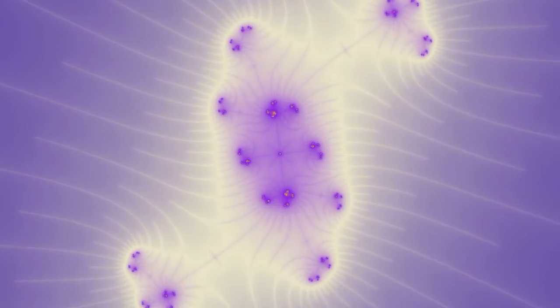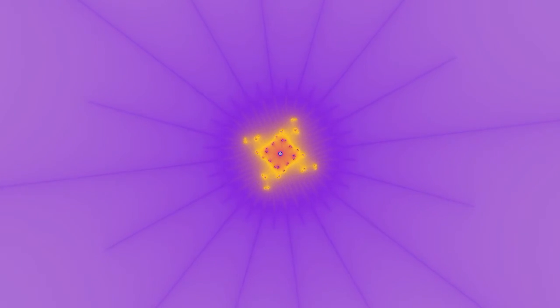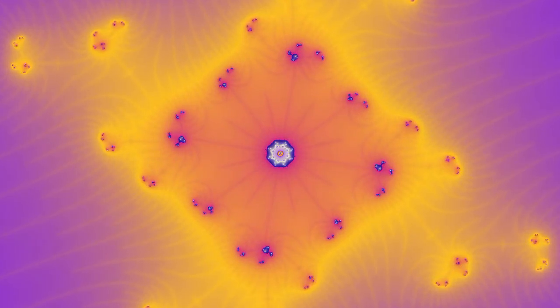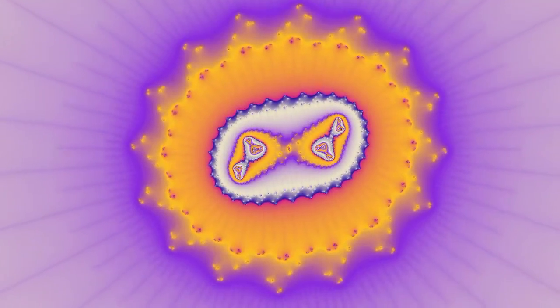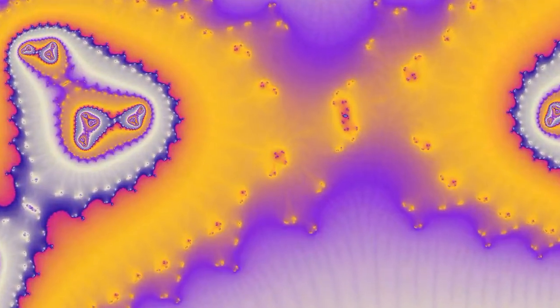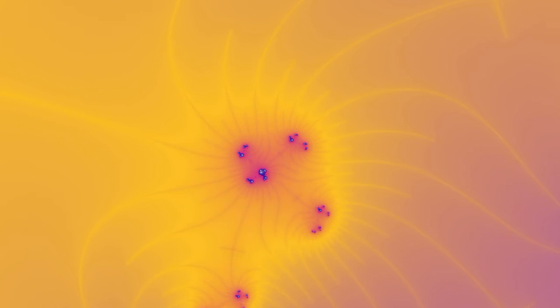Just take a point called Z in the complex plane, let Z1 be Z squared plus C. Z2 is Z1 squared plus C. Z3 is Z2 squared plus C, and so on. If the series of Z's will always stay close to Z and never trend away, that point is in the Mandelbrot set.